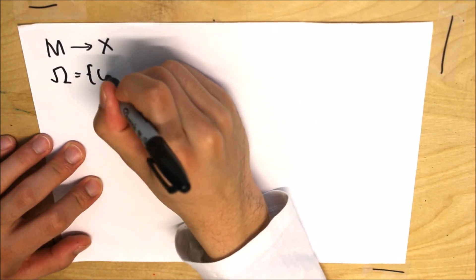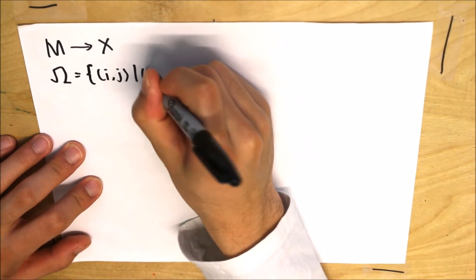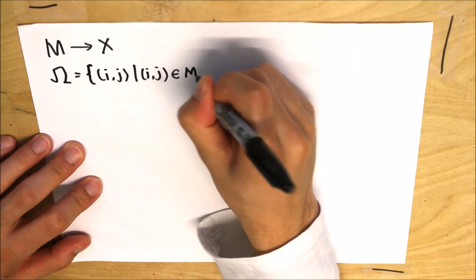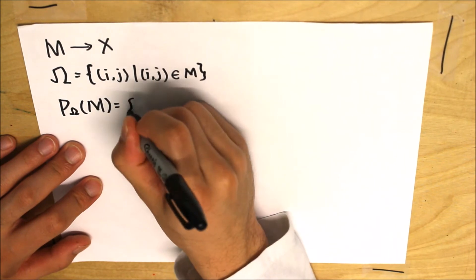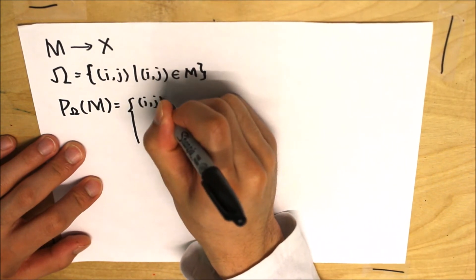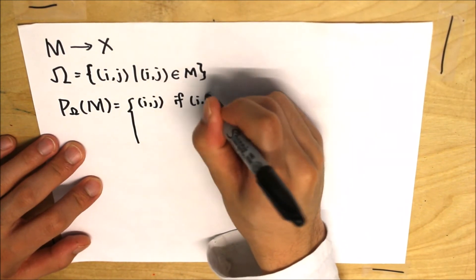Assume we have a matrix M with missing entries, and we want to recover it to the full matrix X. We define Ω as the set of entries in the given matrix, and P_Ω(X) as the matrix that takes all the observed entries and sets all the missing entries to be zero.